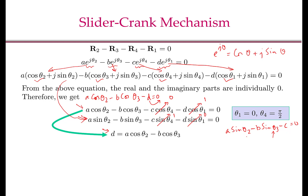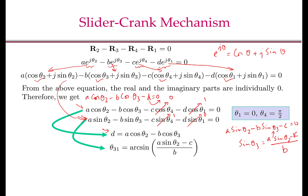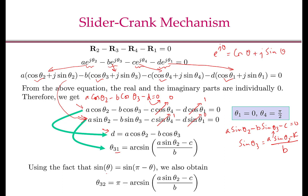With A, B, C, and theta 2 known, from the second equation: sin theta 3 equals (A sin theta 2 minus C) divided by B. Therefore theta 3 equals arcsin of that expression. Since there can be two solutions for the arcsine, theta 3_1 is one solution and theta 3_2 is obtained from the identity sin theta equals sin(pi minus theta), giving theta 3_2 equals pi minus theta 3_1. Once both values are found, substituting into the first equation yields two corresponding values D1 and D2.